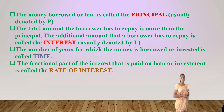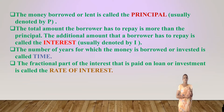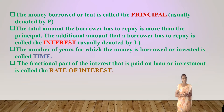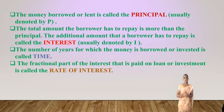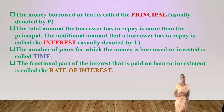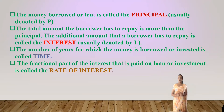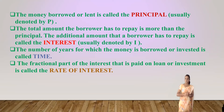Let us see the key points related to simple interest. The money borrowed or lent is called the principal, denoted by capital P. The total amount the borrower has to repay is more than the principal. The additional amount a borrower has to repay is called the interest, denoted by capital I. The number of years for which the money is borrowed or invested is called time. The fractional part of the interest paid on a loan or investment is called the rate of interest.